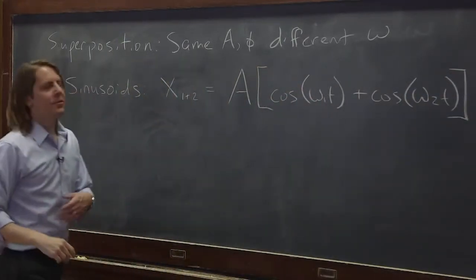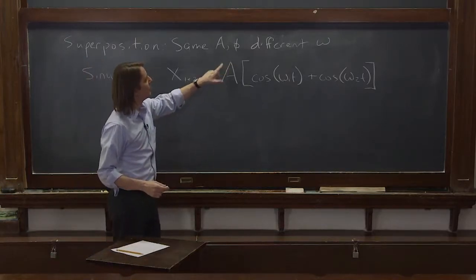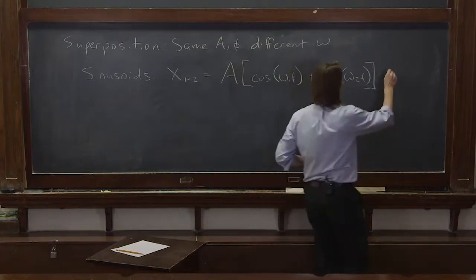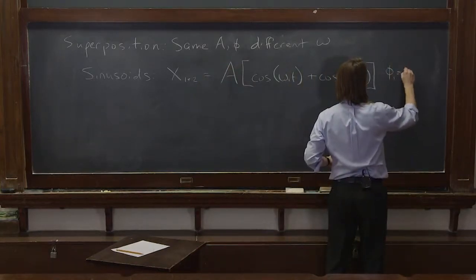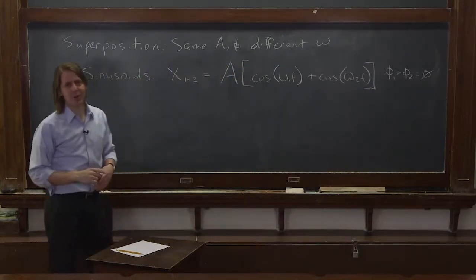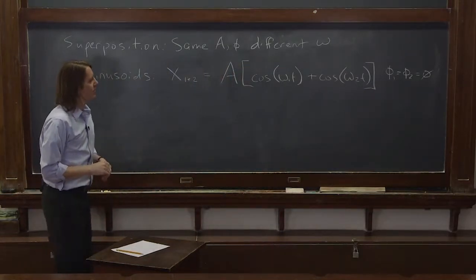And you'll notice I left out the phases. So I said they have the same phase. Really, we just said that phi 1 equals phi 2. But I went ahead and said phi 1 equals phi 2 equals 0. Because for this problem, if they have the same phase, it doesn't matter. So we'll worry about that some other time.